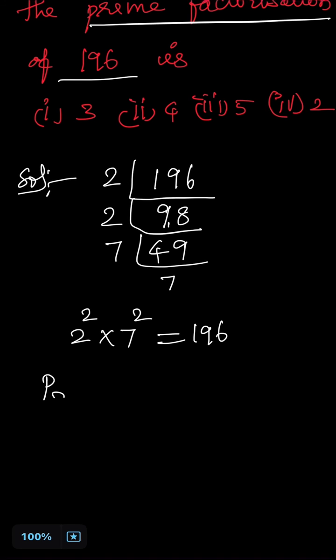Here prime numbers are. What are the prime numbers? Prime numbers equal to 7 and 2. What are the powers of prime numbers? 2 and 2.